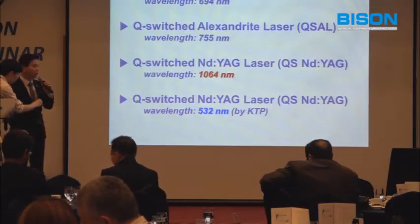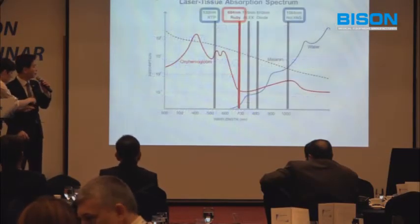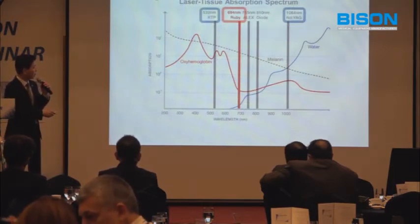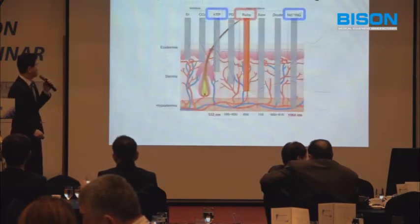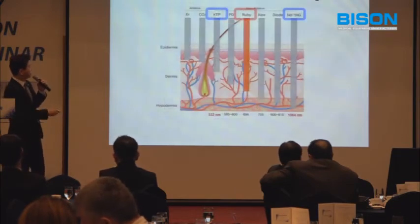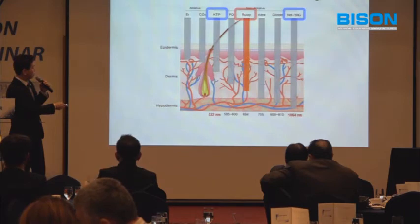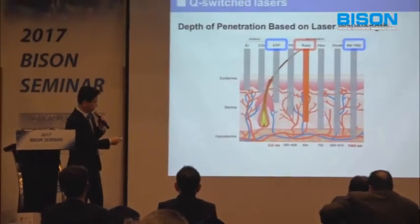As I told you, there are three kinds of Q-switched laser. Q-switched ruby laser is highly absorbed by the melanin and can get deeper penetration. This is the Q-switched ruby laser, Nd:YAG 1064nm, and Q-switched Nd:YAG 532nm.